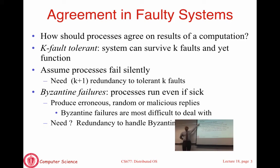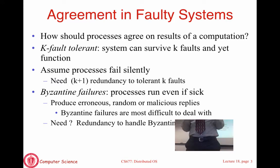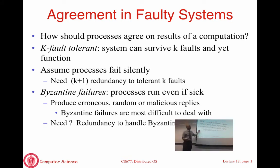In crash fault tolerance, if there are K simultaneous faults you need K plus one replicas — for K equals one, you need just two processes. In Byzantine fault tolerance that's no longer the case. If you only have two replicas and one starts producing arbitrary output, the two replicas will disagree on what the output is and you don't know which one is correct. You need a much higher degree of replication — we'll see that it requires 3K plus 1 replicas. Much of our discussion will focus on Byzantine faults because they are more complex to deal with.